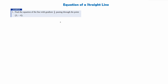Let's do a couple of examples. Find the equation of the line with gradient 1/3 passing through the point (3, −4). We don't have the y-axis intercept — we have a point and the gradient — so we use the formula y subtract b equals m times x subtract a. Our a and b are the coordinates (3, −4) and m is 1/3. Substituting in: y minus (−4) equals (1/3)(x − 3).